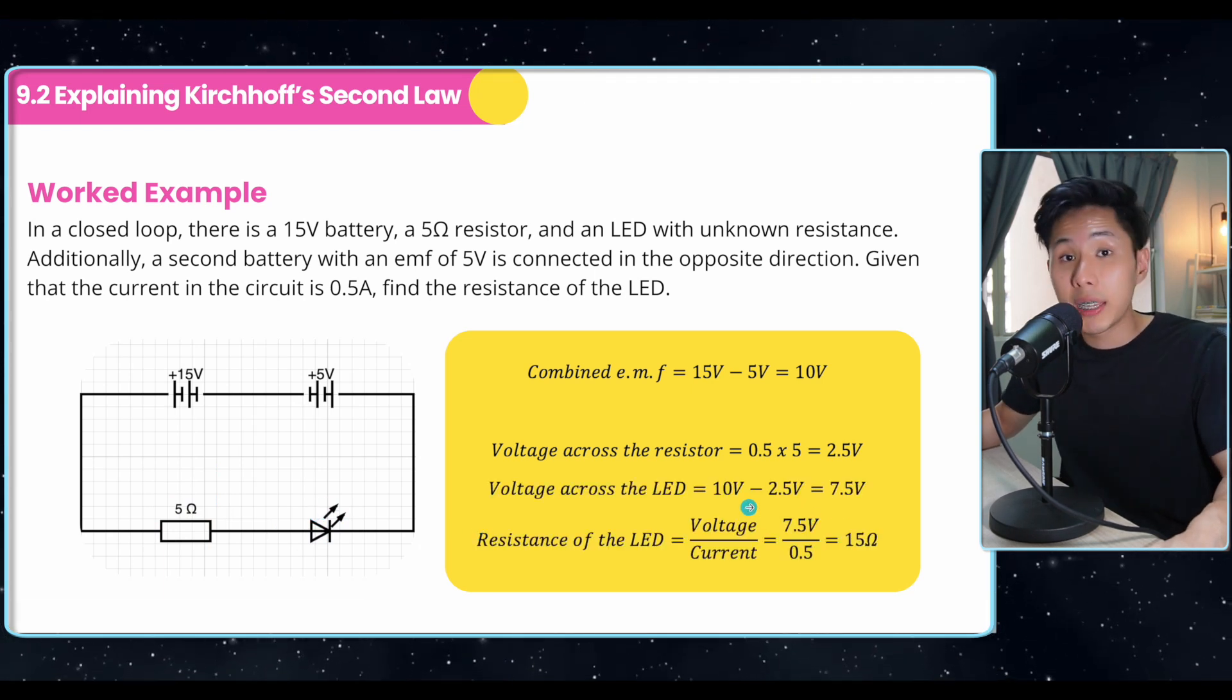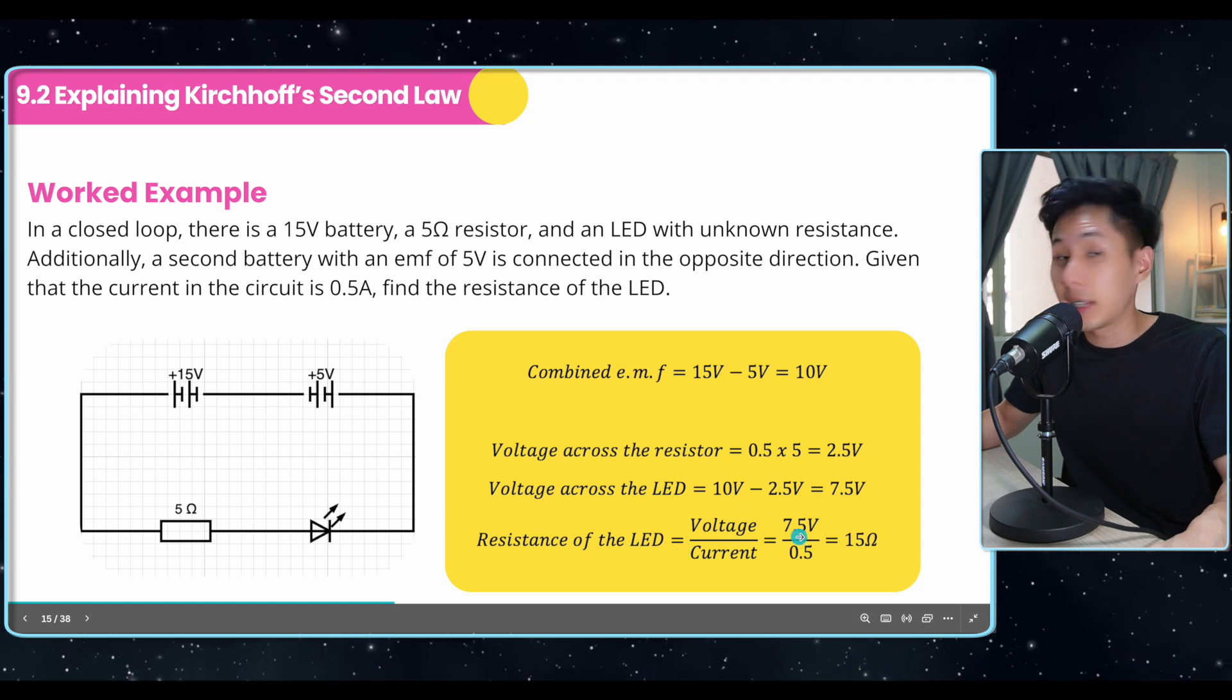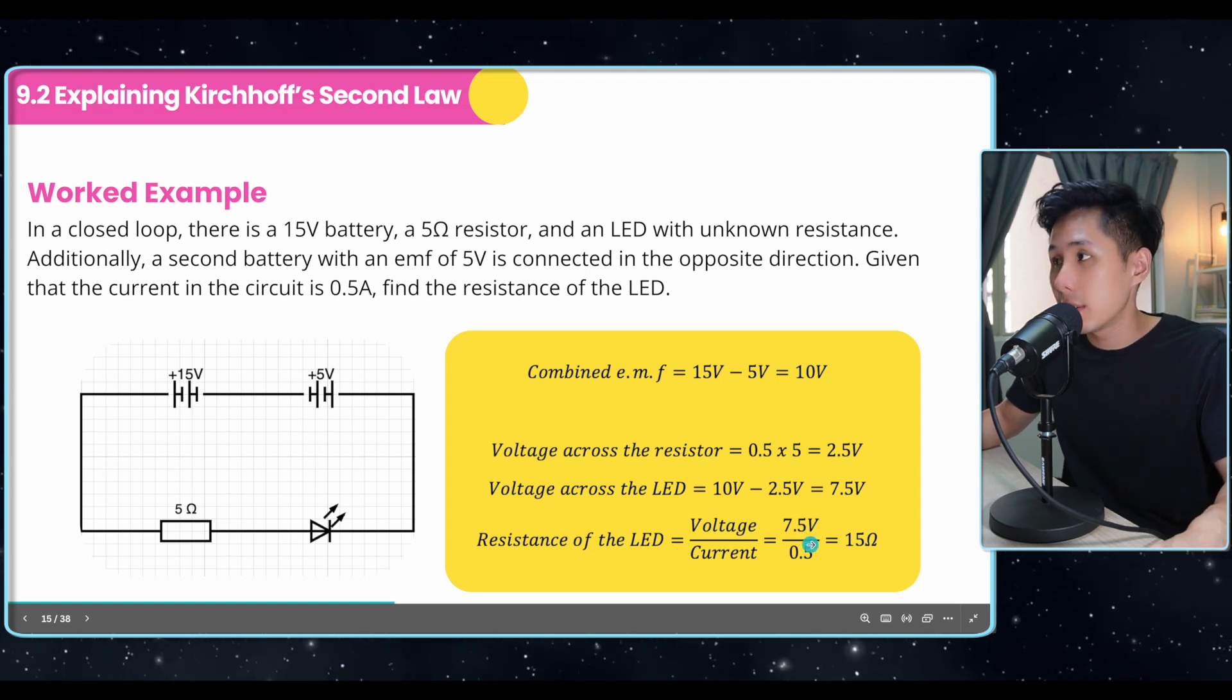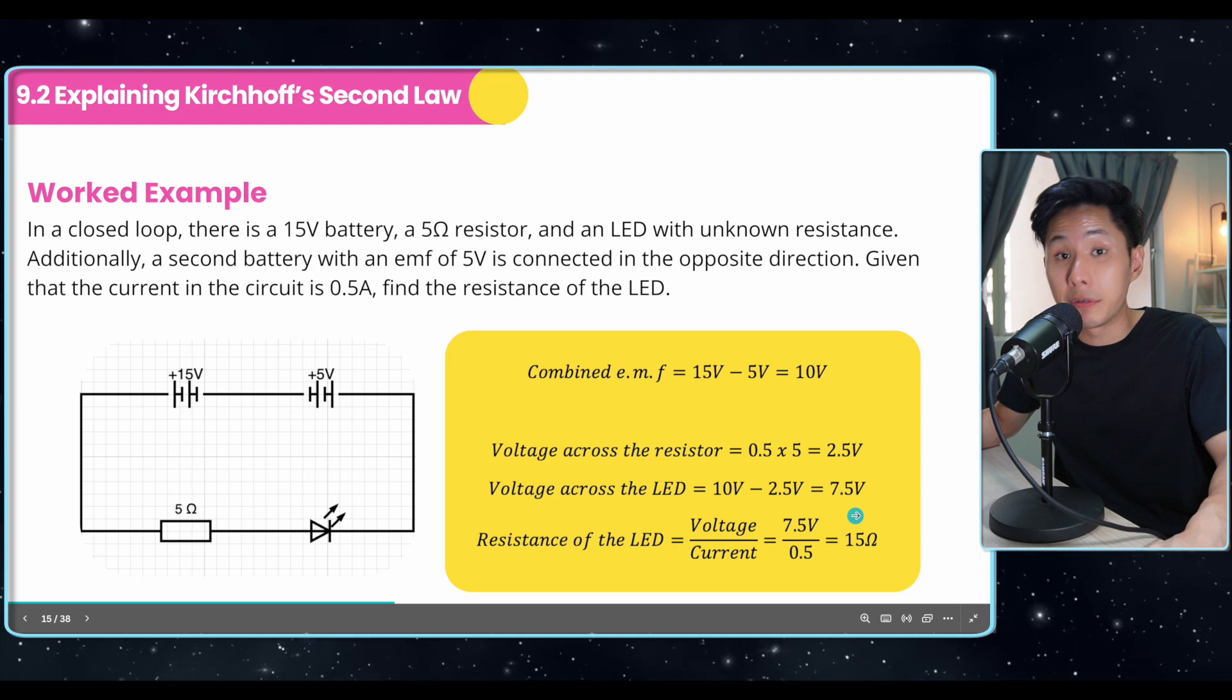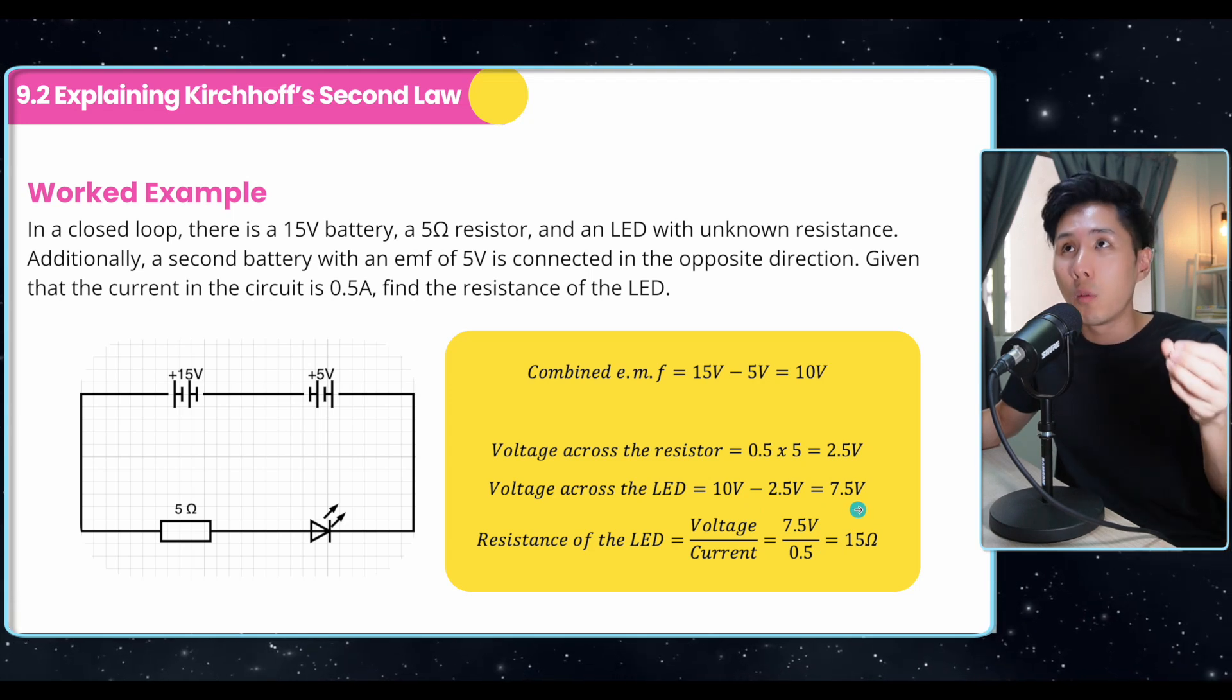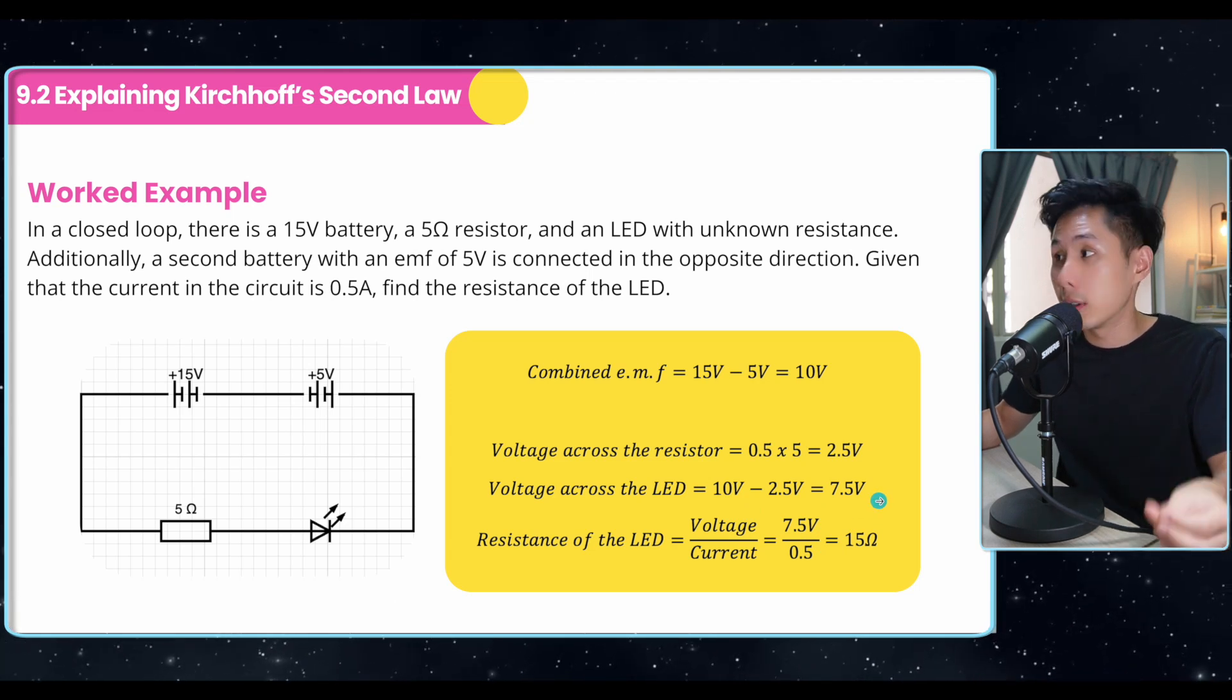With that knowledge, we can calculate the resistance of the LED by using 7.5 divided by the current, which is 0.5, and then get 15 ohm. And that's how we can use Kirchhoff laws to solve a problem.